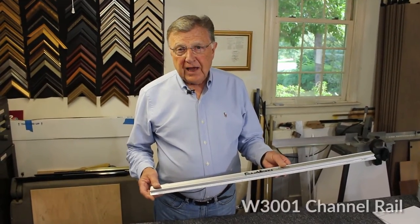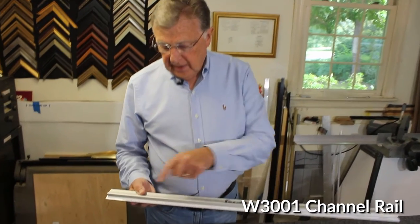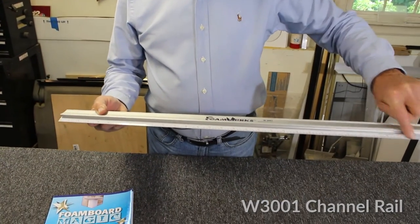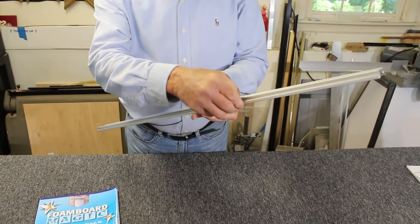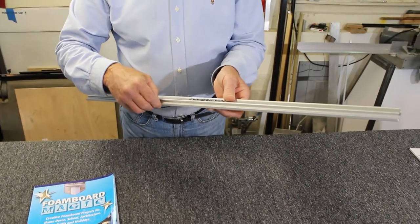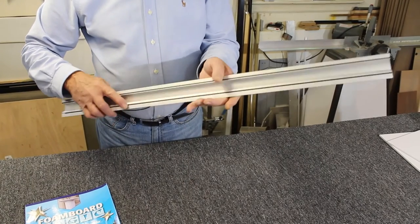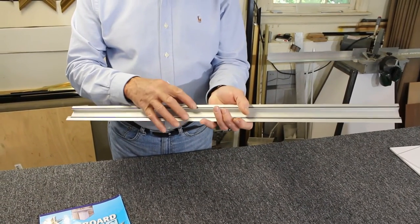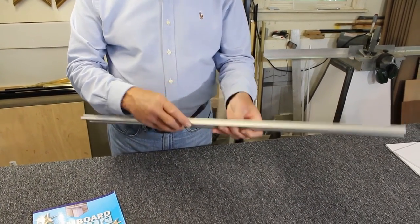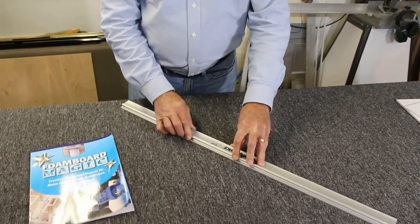The Foamworks channel rail is made of aluminum. It has a 32 inch scale on it. The other side has a channel where some of the Foamworks tools fit and you can guide them along. On the other side, there are two rubber strips embedded so that when you put it on your work surface, it doesn't slide around.